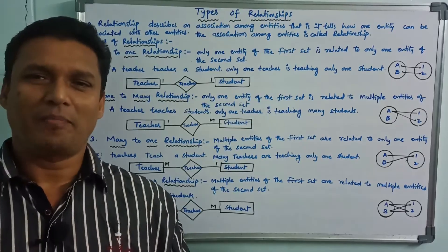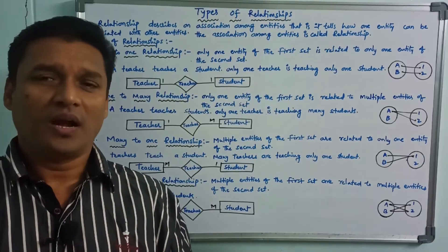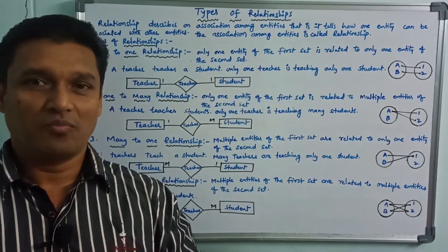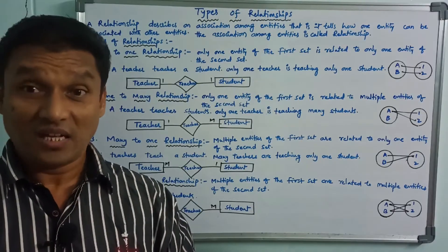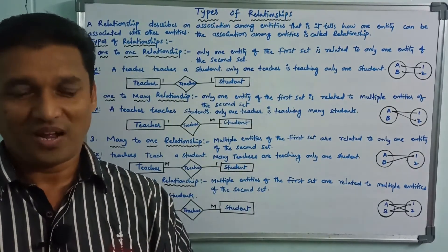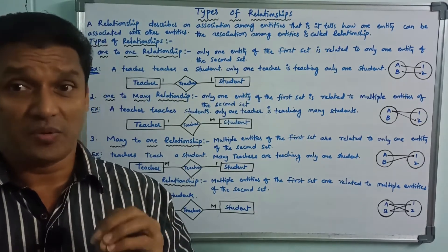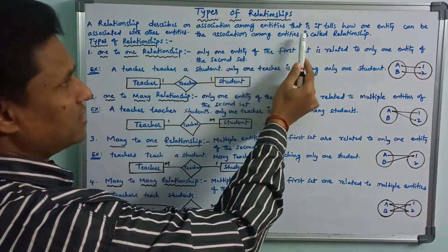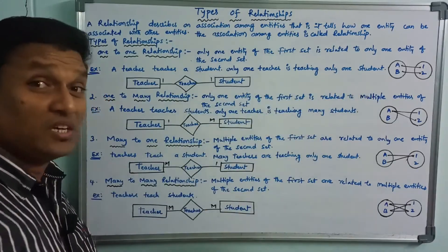First of all, what about Relationships? When people meet other people, you will also have a relationship. That means one person gets a relationship with another person — one-to-one, one-to-many, and many-to-many. The relationship describes an association among entities; it tells how one entity can be associated with another entity. The association among entities is called a relationship.